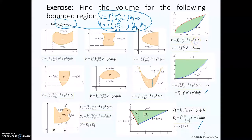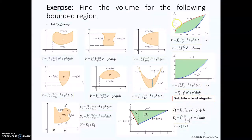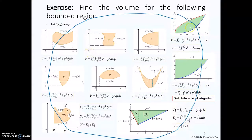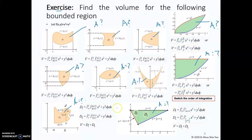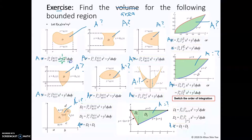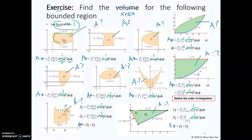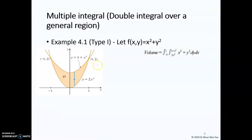You see that for some problems, dy dx can be switched to dx dy, as shown in these two examples. This is called switching the order of integration. Through this exercise, you should be more familiar and understand how to form the equation to find the volume under a non-rectangular region. This is very important — please make sure you master it. Also, if you want to find the area under the region instead of the volume, you know that the height function multiplied by the area gives you the volume. So if you let the height function equal to 1, then you only obtain the area.